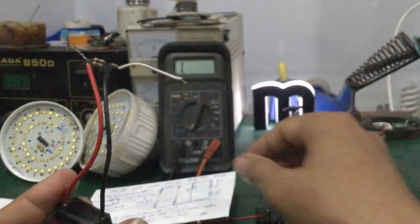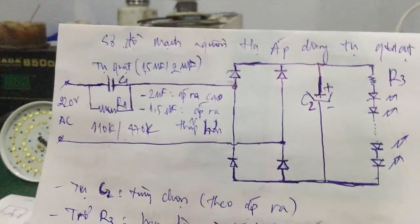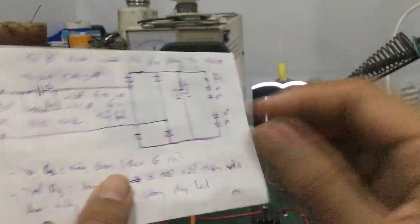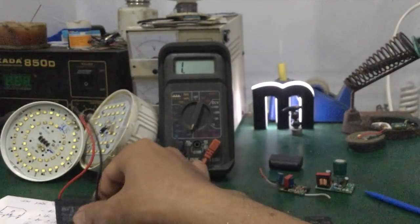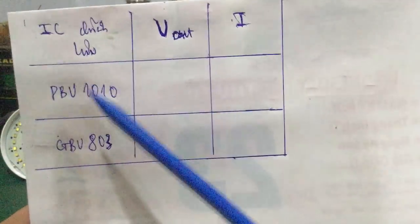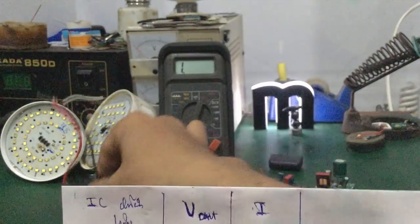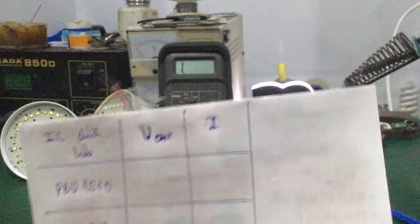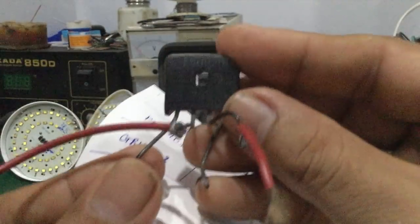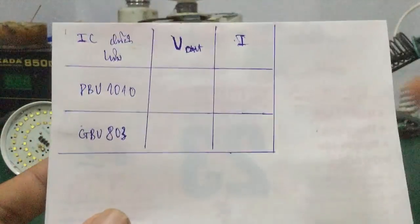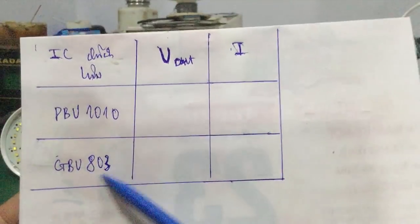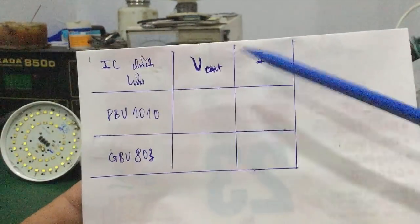Mình sẽ làm một cái bảng để các bạn thấy. Cái điện áp ngõ ra phụ thuộc vào hai yếu tố: một là giá trị của con tụ, hai là giá trị của con IC cầu chỉnh lưu. Ở đây mình sẽ demo cho các bạn thấy bằng cách dùng 2 con IC cầu chỉnh lưu: một con FPU1010 và một con GPU803, xem điện áp và cường độ dòng điện khác nhau như thế nào.